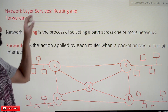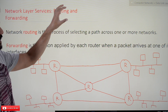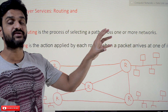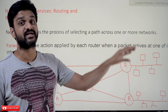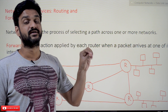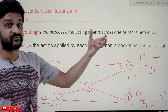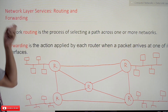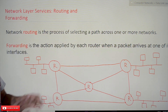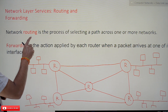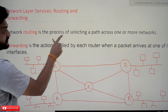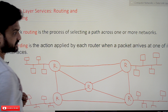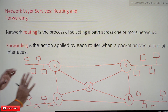Routing and forwarding are very important services provided by the network layer, and the design of the network layer is based upon the concerns of routing and forwarding. So what is meant by routing? Network routing is the process of selecting a path across one or more networks.